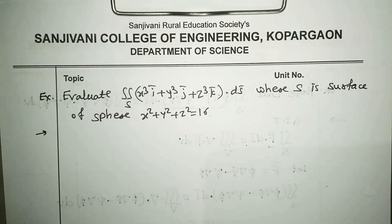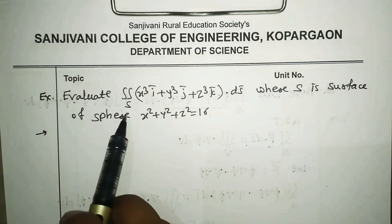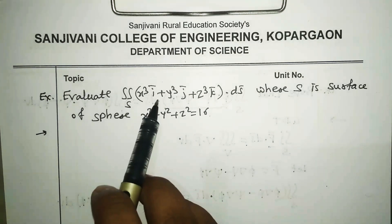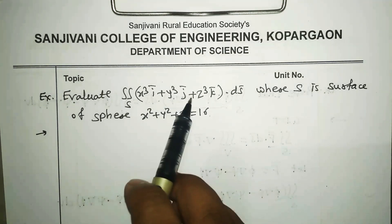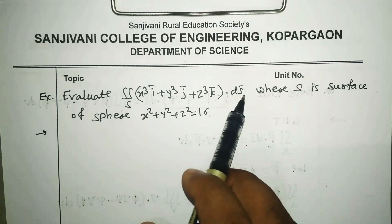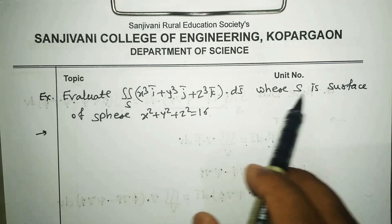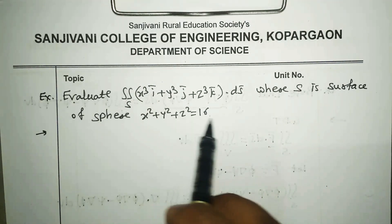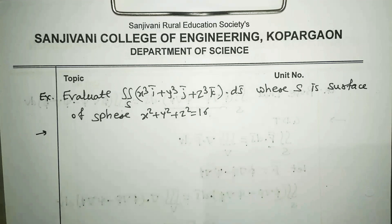Hello all, welcome back. The next example is on Gauss Divergence Theorem: evaluate the double integral over S of (x³ i-bar + y³ j-bar + z³ k-bar)·dS-bar, where S is the surface of the sphere x² + y² + z² = 16.